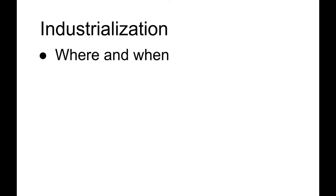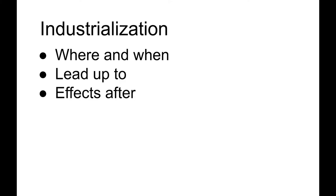We have to start with the Industrial Revolution. We can't really talk about development and understand the historic roots and present-day patterns without going back and looking at the early advantages that resulted from industrialization — which is why it was the second of the three revolutions that transformed population on earth. So: industrialization — where and when, what led up to it, and what were the effects after?